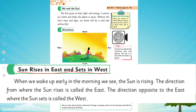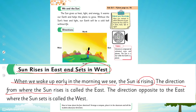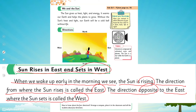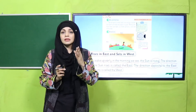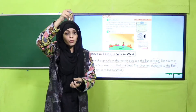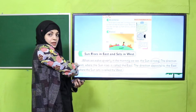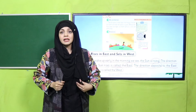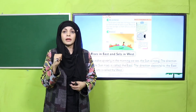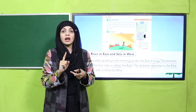The Sun rises in the east and sets in the west. When we wake up early in the morning we see the Sun rising — the direction from where the Sun rises is called the east. The direction opposite to the east, where the Sun sets, is called the west. So east and west are the directions of the rising and setting of the Sun.